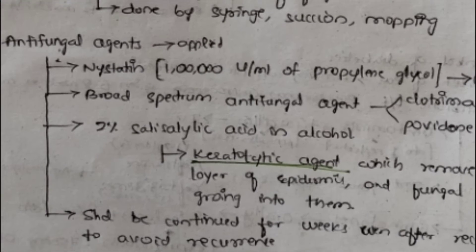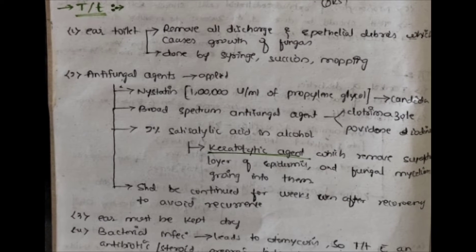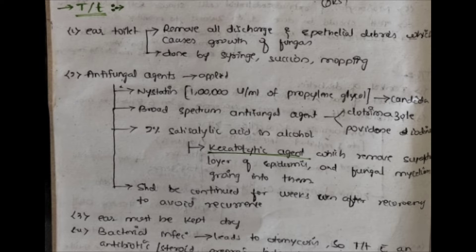Coming to the treatment, we first perform an ear toilet — removal of all discharge and epithelial debris which can cause growth of the fungus. Ear toilet can be done by syringing, where saline is introduced into the ear with a syringe; by suction, using a vacuum to pull out wax or fungus; or by mopping, using cotton to wipe out all discharge and debris from the external auditory canal.